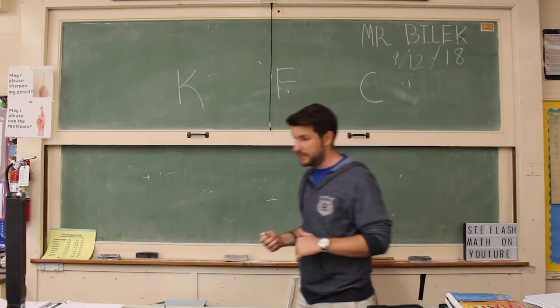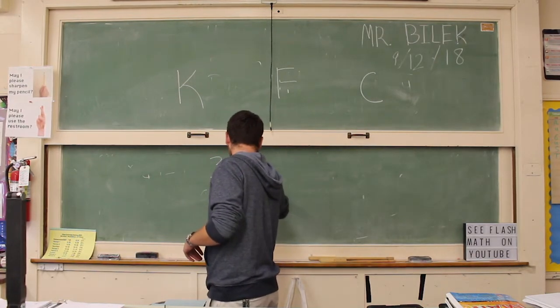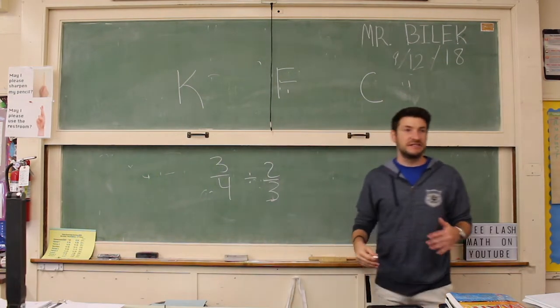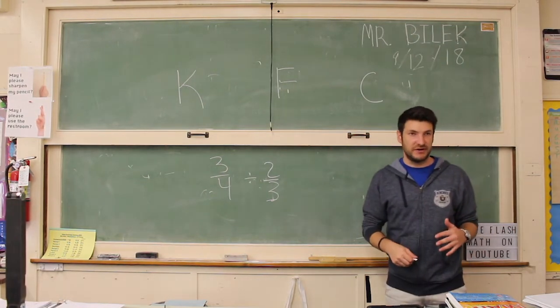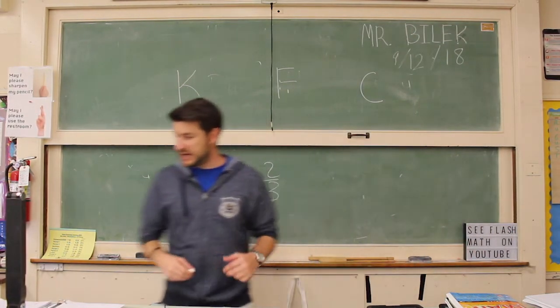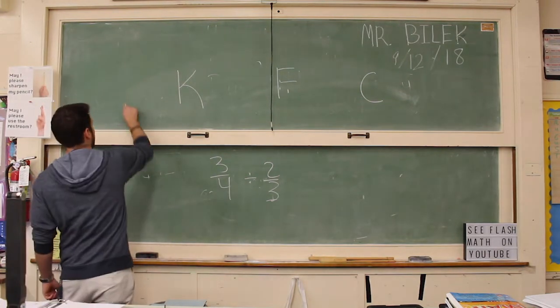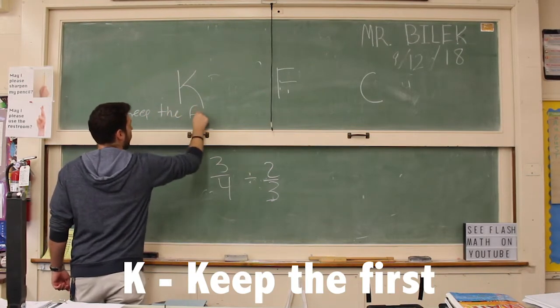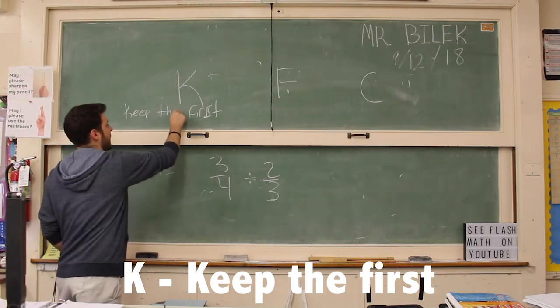With these three steps we can remember how to divide a fraction. KFC. We're going to set up a problem and I'm going to walk you through it. The problem is 3 fourths divided by 2 thirds. We need to apply our steps KFC and get a very tasty, delicious answer. Our first one is K.